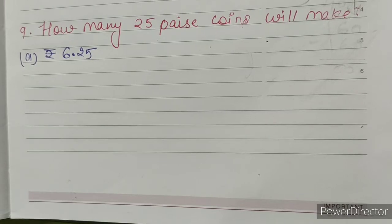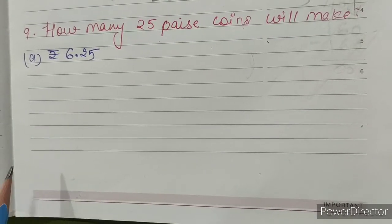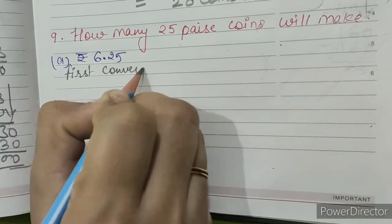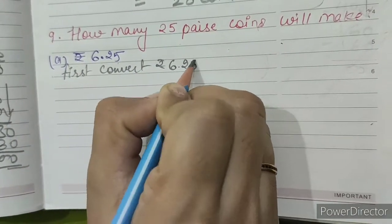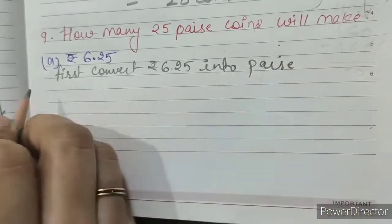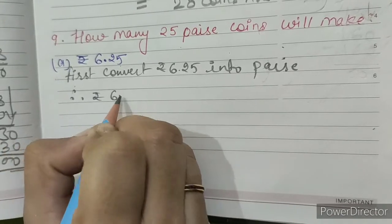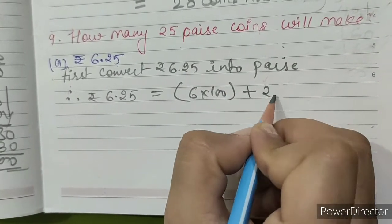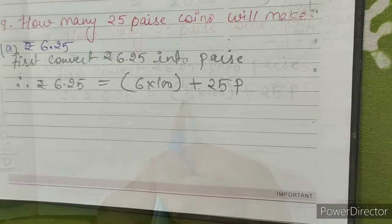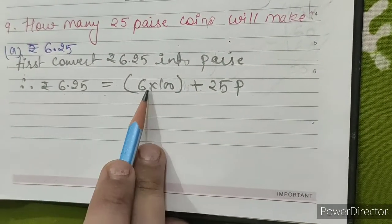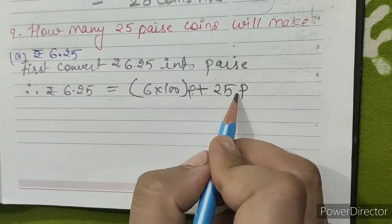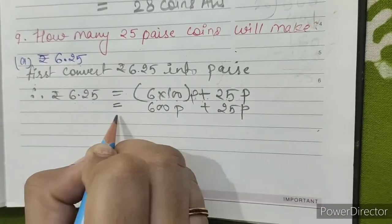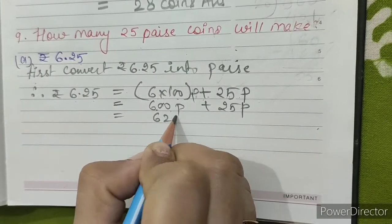Question number 9: How many 25 paise coins will make Rupees 6.25? So first, convert Rupees 6.25 into paise. Therefore, Rupees 6.25 equals 6 into 100 paise plus 25 paise. 6 into 100 is 600 paise, plus 25 paise. 600 plus 25 equals 625 paise.